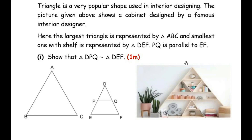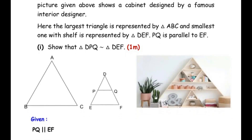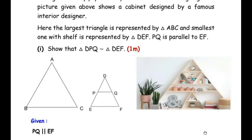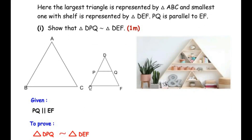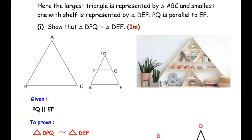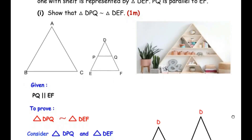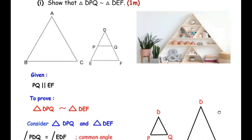The picture shows a shelf in the shape of a triangle. The big triangle of the shelf is represented by triangle ABC and the smallest triangle is represented by triangle DEF. PQ is parallel to EF, which is the base of the smaller triangle. With this information we have to prove that triangle DPQ is similar to triangle DEF. We begin by writing the given data and split the big triangle into triangle DPQ and triangle DEF.